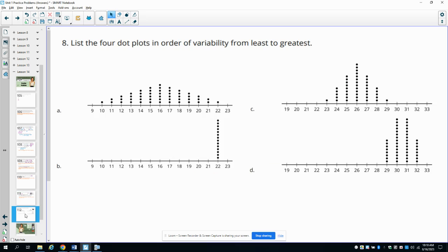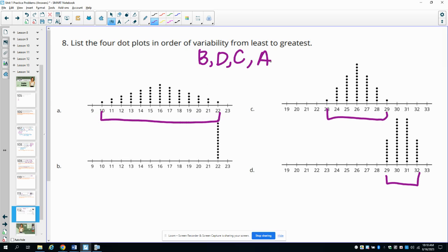Number eight: List the four dot plots in order of variability from least to greatest. Remember, variability is how much the data is varying. In graph B, the data is not varying at all, so that's going to be the least variable data. Then you're really looking at the width of these. This is the next smallest width here, so graph D would be the next, then it widens out to C, and then the widest spread or variability is in A. So the least to greatest would be B, D, C, A.